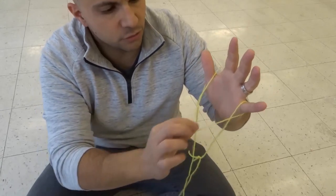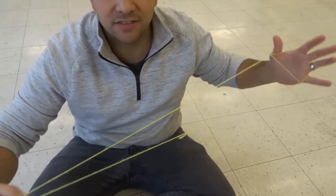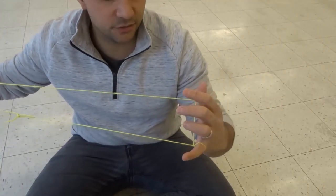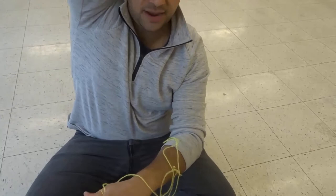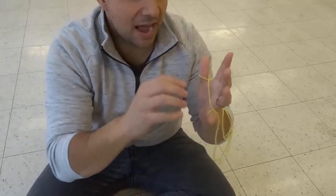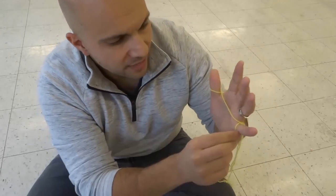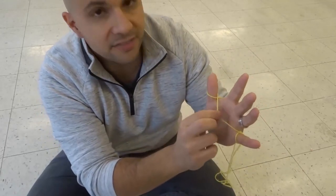I'm now gonna pull on this new palm string just like that. I have this long loop here that I'm gonna bring back over these three center fingers just like that. Okay so as you can see I've looped it back over the three center fingers. I have this long loop on the back of my arm. I have this pinky loop, this thumb loop, and this palm string.